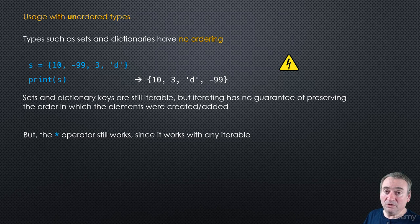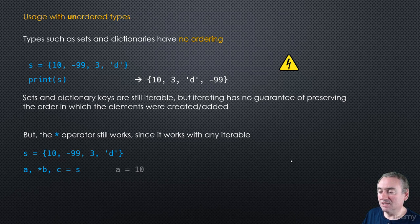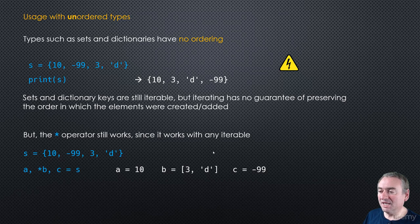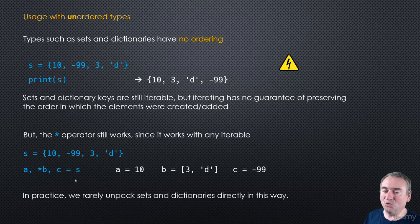The star operator still works with sets since they are iterables. You can write *A, B, C = s, but the problem is 'first element' and 'last element' don't really have meaning. You'll get some result, but you can't count on any particular order. So using unpacking this way with sets is rarely useful.